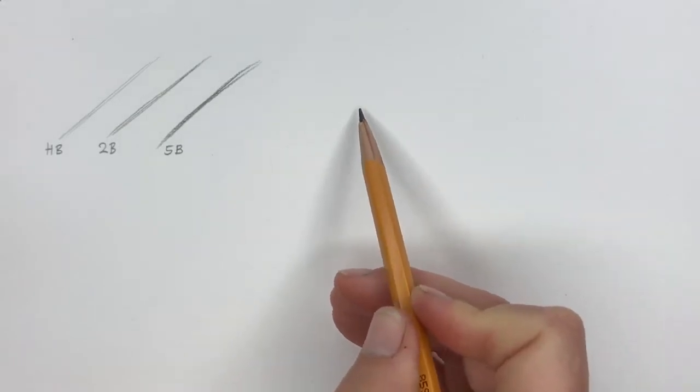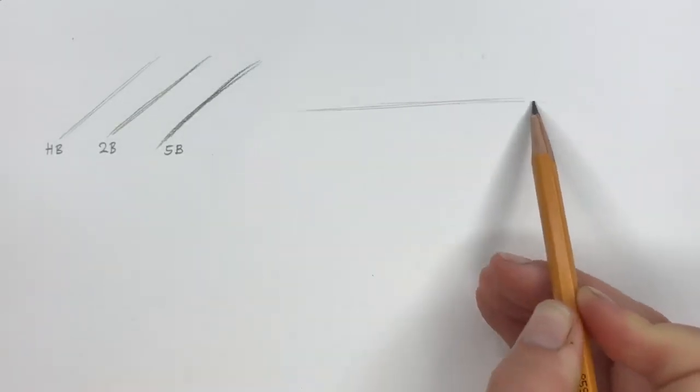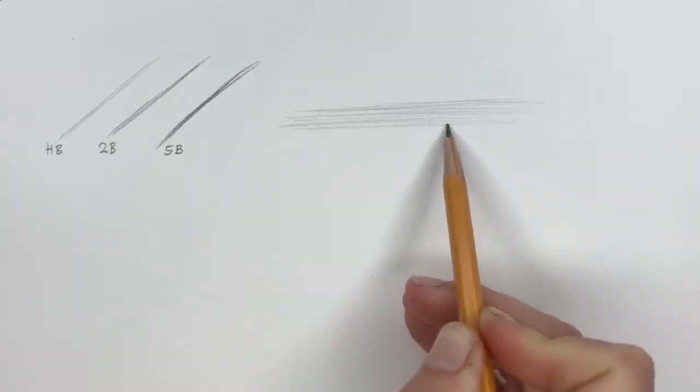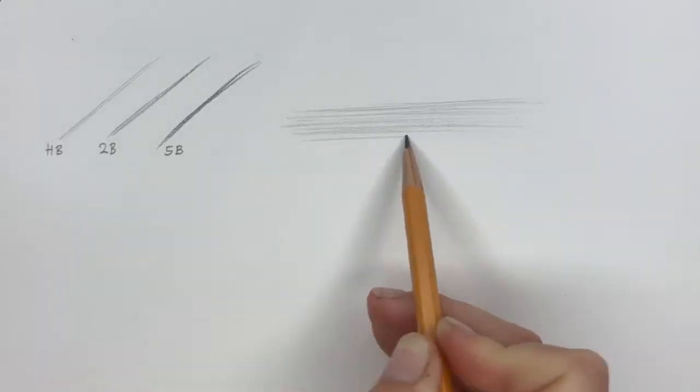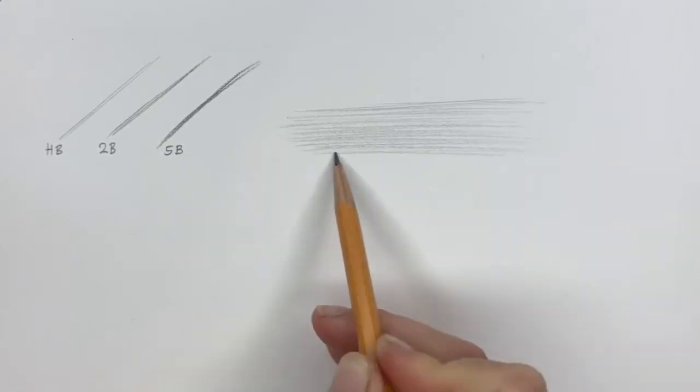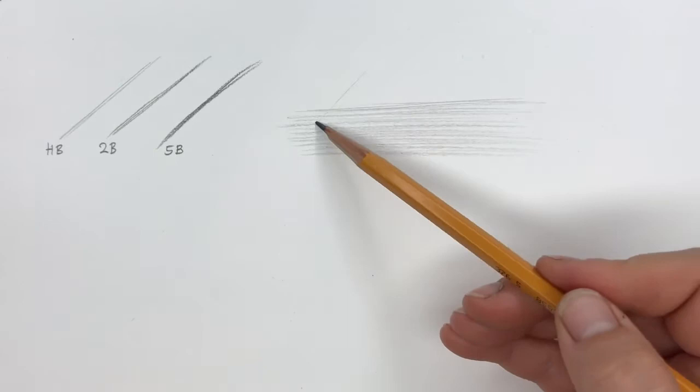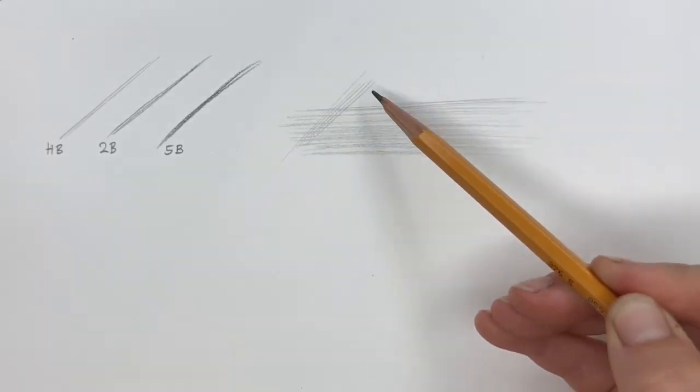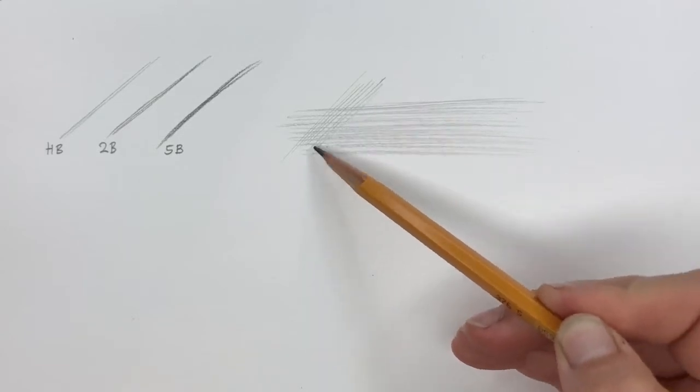So with HB I'm going to do this linear hatching. It's where I'm placing a lot of lines very close to each other. And every time I do a line, I let the pencil leave the paper, so they're forming together a clean area of tone.